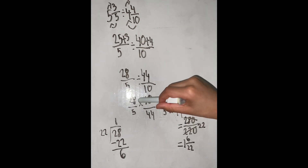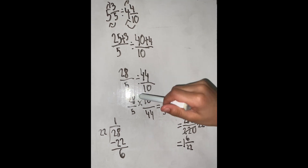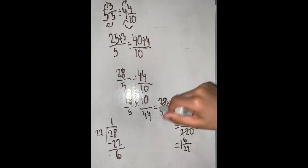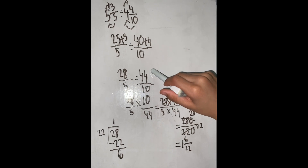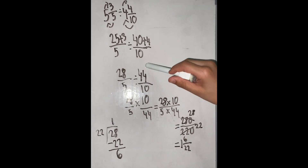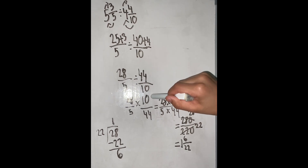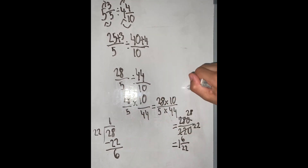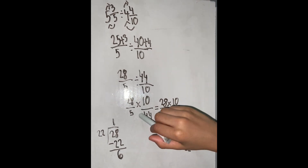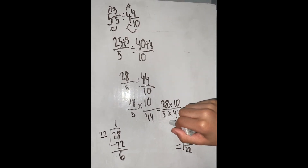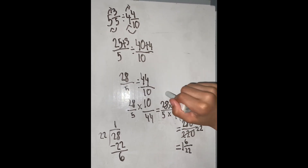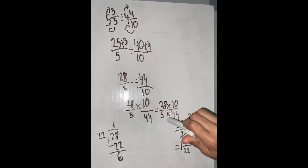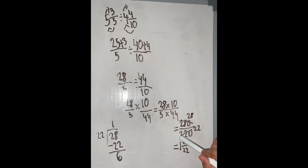So next, multiplying is the same as dividing. So 28 over 5 times — to make it make sense, we have to turn over the second fraction. So 10 over 44. We write equals and then 28 times 10 for our numerator and 5 times 44 for our denominator. So 28 times 10 equals 280, and 5 times 44 equals 220.